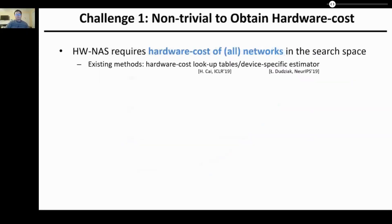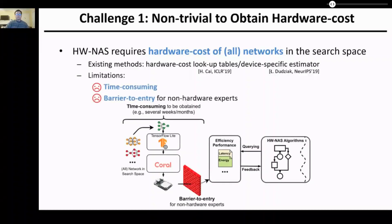Despite the promising performance achieved by state-of-the-art HWNAS, there exist some critical challenges which limit the development of HWNAS. The first challenge is that it's non-trivial to obtain the hardware cost of all networks in the search space. Existing methods either pre-collect this data to construct a HWNAS lookup table or adopt device-specific estimators or models, but both can be time-consuming and impose a barrier to entry for non-hardware experts, because it requires cross-disciplinary knowledge in algorithms, microarchitecture, and device-specific combinations.